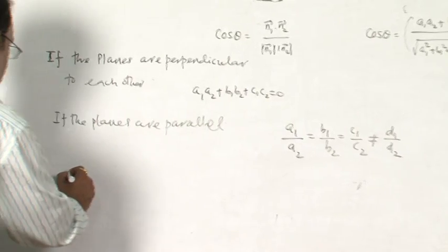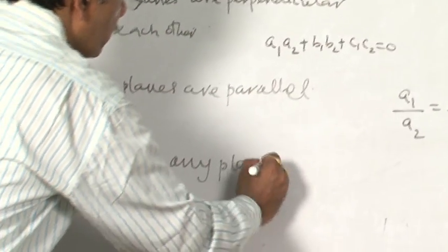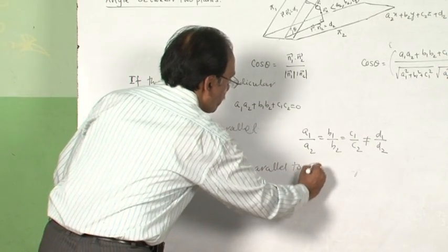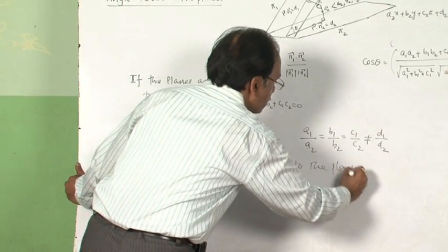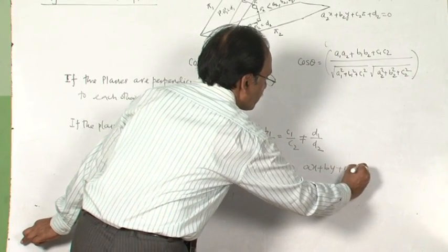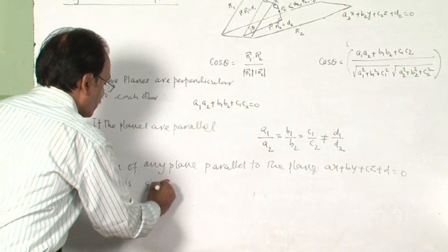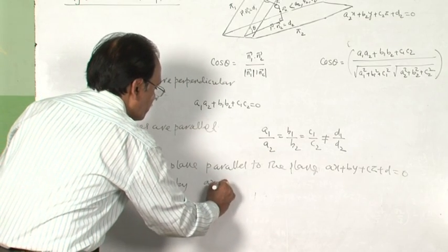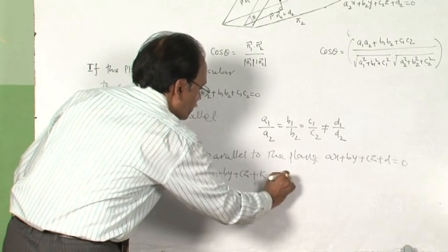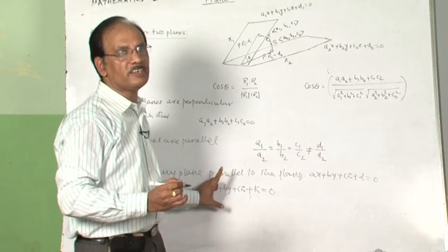That means we can say the equation of any plane parallel to the plane ax + by + cz + d = 0 is given by ax + by + cz + k = 0. Using this concept we can solve any question very easily.